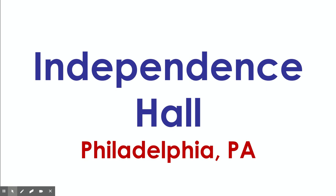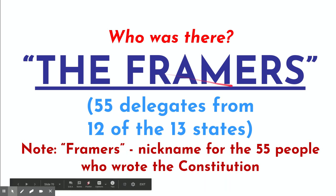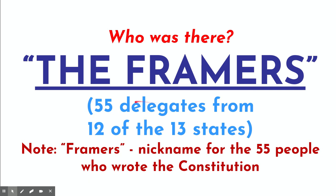Who was there? The people who were there were nicknamed the framers. Framers are people who build the framework of a house or building — the skeleton. These people, because they built the framework for our country, are nicknamed the framers. So write in your notes 'framers' in quotes, and then 55 delegates — those are representatives — from 12 of the 13 states. The one state not there was Rhode Island.